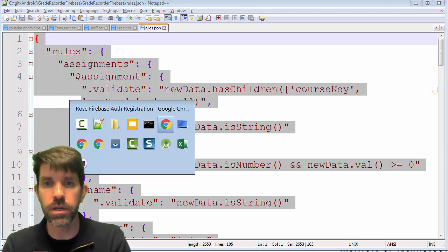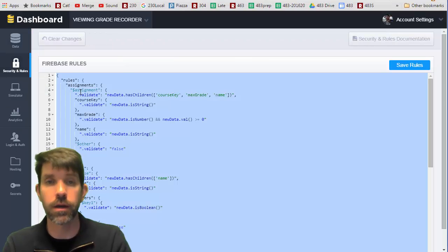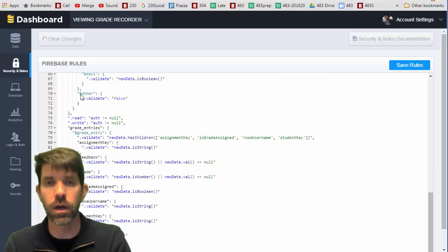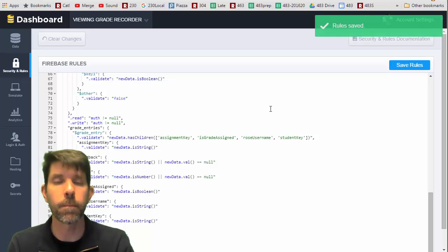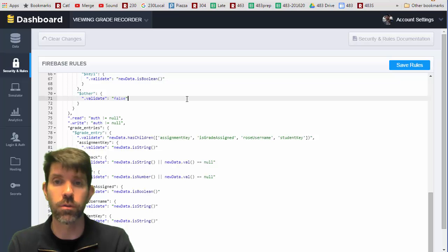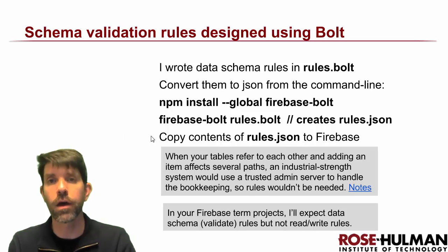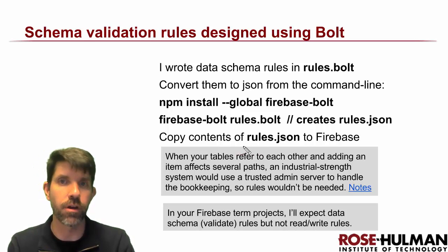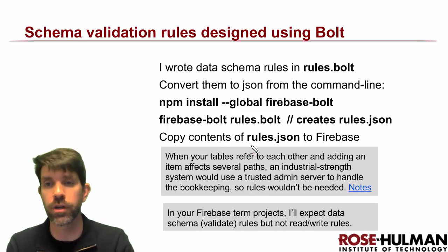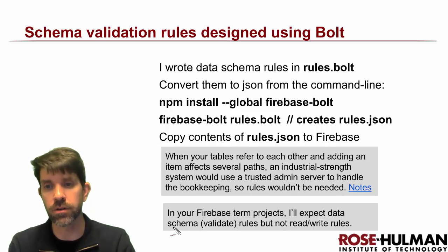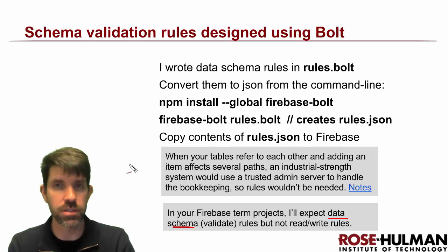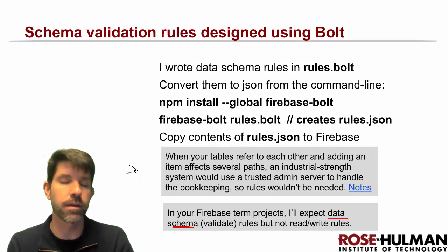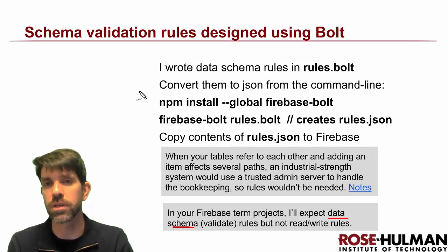Grab the entire contents of rules.json, go back into Firebase, navigate to Security and Rules, and paste them in. Remember to save the rules. The rules are pretty much all validation rules — I wrote them by digging into the documentation a bit. I focused on validating the data schema and didn't dig too much into read/write rules beyond requiring authentication.